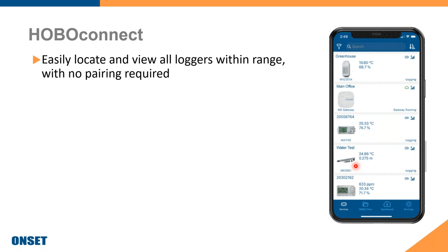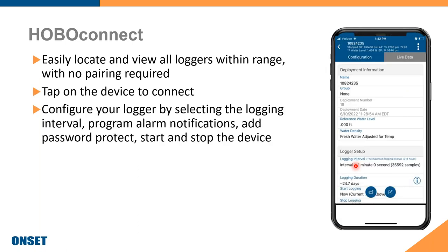The HOBO Connect app is a free download — no pairing required. When within range, all nearby loggers populate on the main screen. You tap a device to configure it: name the product, set the logging interval (one second to 18 hours, with 10–15 minutes being most common for months of data), and set a start time — either immediately or a delayed future date. At one-minute intervals you get 24 days of data; at 10–15 minutes you get months.